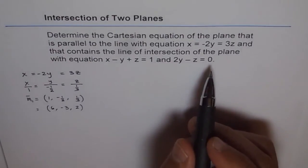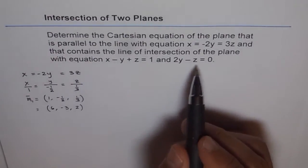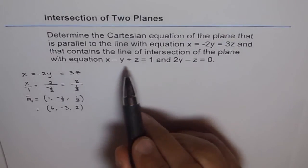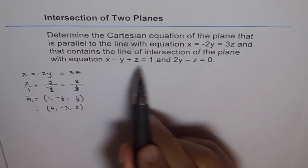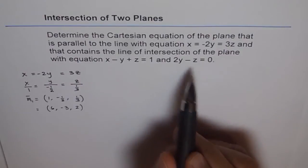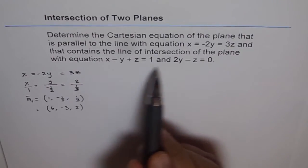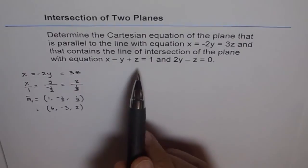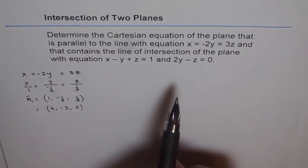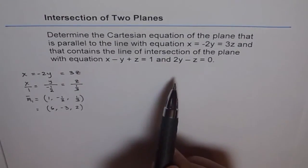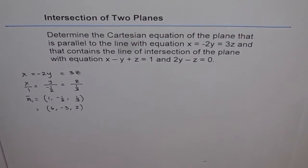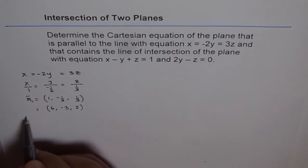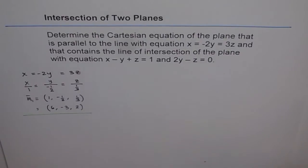Now for the second direction vector, let's find the line of intersection between the two planes. Are these planes parallel? No, they are not — their normals are not scalar multiples, so they are not parallel. If the planes are not parallel, they will intersect in a line. So let's find that line by solving the two plane equations as simultaneous equations.